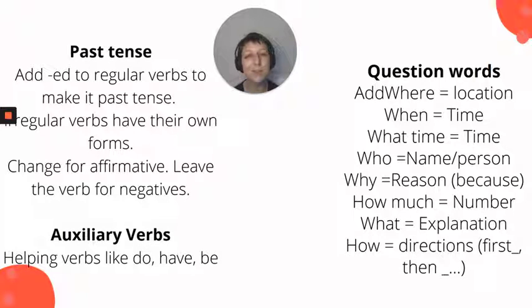For our different irregular verbs, they have their own form. He bought a new computer. Buy and bought. We also have she said to go to the store. So said is not ed, it's id. That's a y rule. And we also talked about leaving the verb the same for negatives and changing it for our affirmatives.